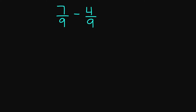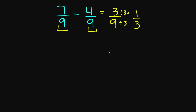For an example, 7 over 9 minus 4 over 9. My denominators are the same, so I'm going to subtract my numerators. 7 minus 4 is going to give us 3, over 9. I can actually simplify my 3 over 9 because 3 goes into 3 — that equals 1 — and 9 divided by 3 equals 3. So your answer is going to be 3 over 9 or 1 over 3.